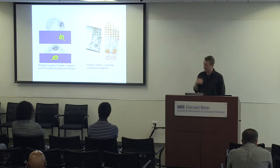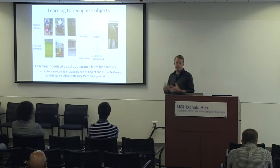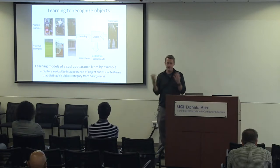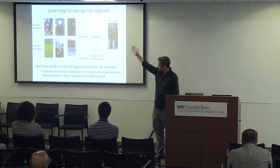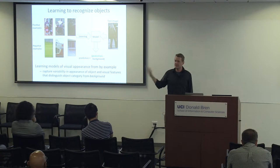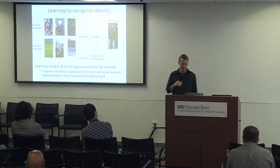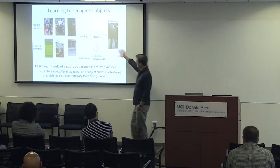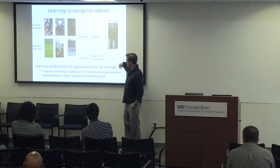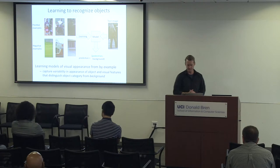The general tools we use to build these systems are based around machine learning. We want to build a model that captures the variability and appearance of data out in the world. For example, to learn to detect people in images, I collect examples of images containing people as well as negative examples of images without people, and train up a classifier that, given a new test image, can predict whether it shows a pedestrian or some background object.